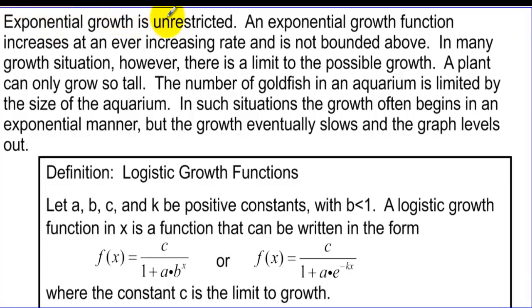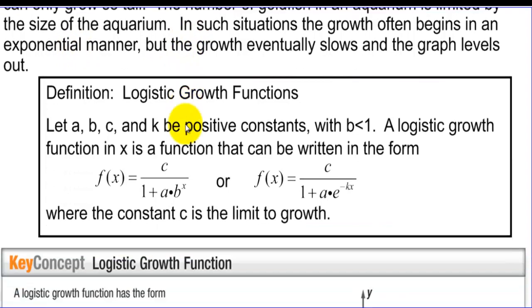Exponential growth is unrestricted. An exponential growth function increases at an ever increasing rate and is not bounded above. In many growth situations, however, there is a limit to the possible growth. A plant can only grow so tall. The number of goldfish in an aquarium is limited by the size of the aquarium. In such situations, the growth often begins in an exponential manner, but the growth eventually slows and the graph levels out.